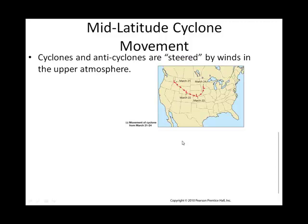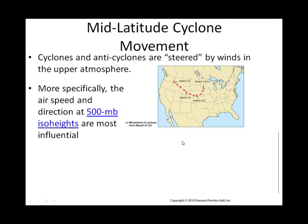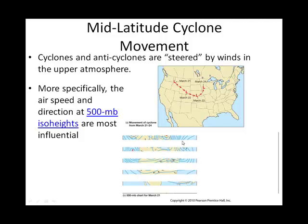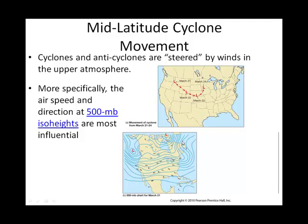Mid-latitude cyclones are steered by those upper-elevation winds. Remember the meandering westerly winds aloft? That's what makes this big weather system move across North America. In order to get a handle on how it's going to be steered, we look at the upper latitudes — specifically, it's helpful to use the 500-millibar isobaric chart to see what the winds are doing in the upper atmosphere.